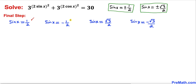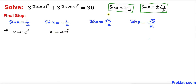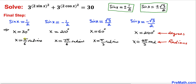We now have four values of sin x. If sin x = 1/2, then x = 30°; if sin x = −1/2, then x = 210°; if sin x = √3/2, then x = 60°; and if sin x = −√3/2, then x = 240°. In radians, these correspond to π/6, 7π/6, π/3, and 4π/3.